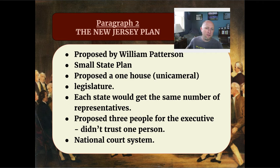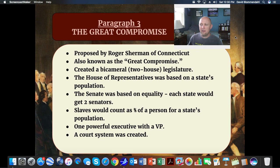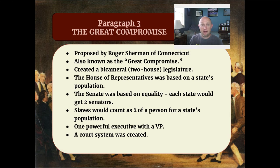So in the end, how did the Virginia Plan and the New Jersey Plan become part of the Constitution? Who won out? What compromises were made? We call that the Great Compromise, and this will be the third paragraph of your essay. The Great Compromise is also known as the Sherman Compromise or the Connecticut Compromise because it was proposed by Roger Sherman of Connecticut. In the end, a bicameral legislature was created, made up of two houses. We call one of them the House of Representatives and the other the Senate. The House of Representatives and the Senate combined, we call Congress.